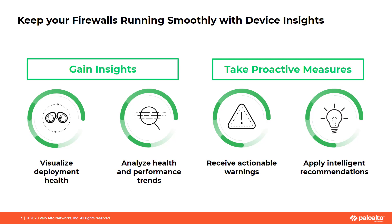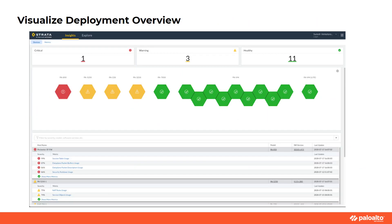Device Insights is powered by the telemetry generated and collected from firewalls running PanOS 10.0 and later. Please refer to the PanOS 10.0 product documentation for how to enable telemetry collection in your firewalls and Panorama. Once you have activated telemetry collection in one or more of your firewalls, the data starts flowing into the Palo Alto Networks Cortex Data Lake, where a customer-specific instance is allocated to store the data from all firewalls associated with your support account.